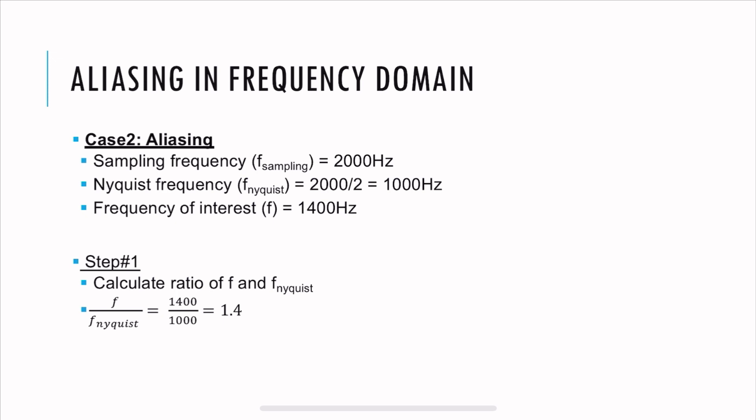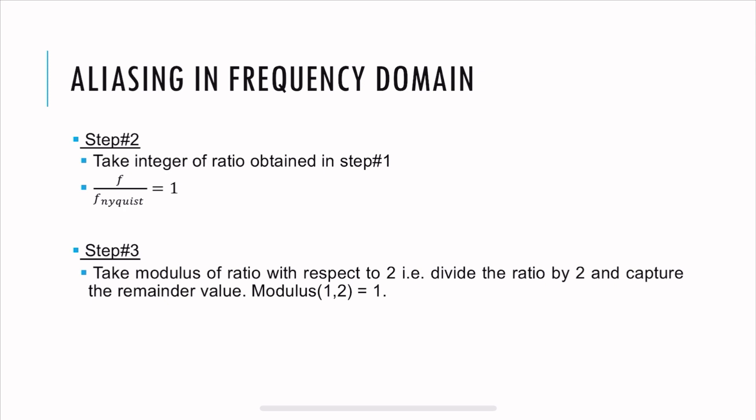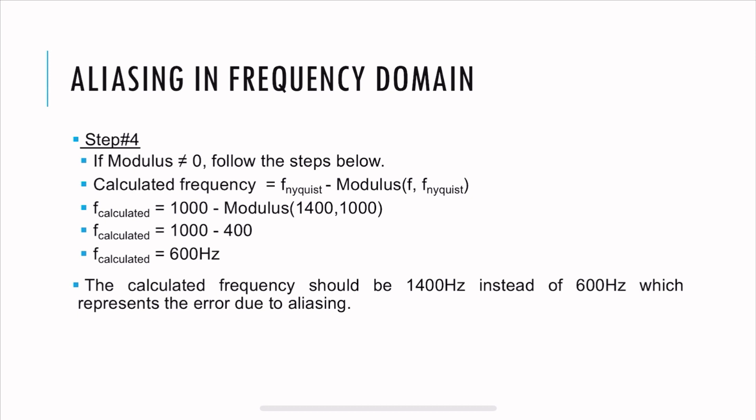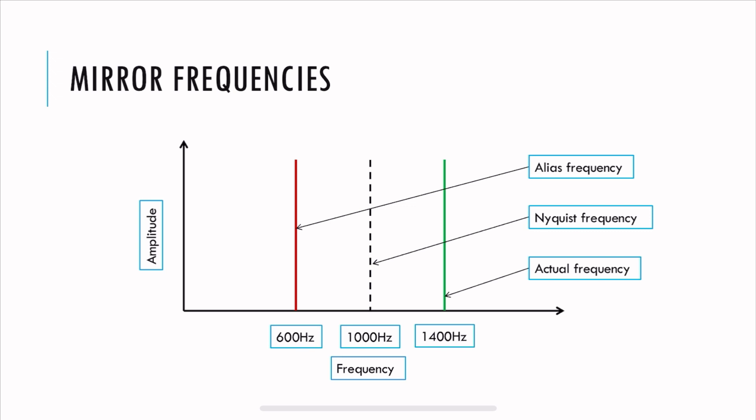So again, we follow the same steps. We calculate the ratio of f over f_Nyquist. We get it 1.4. The next step is to take the integer. And integer of 1.4 is we take 1. Then take the modulus, modulus of 1 over 2, and capture the remainder. The remainder is 1. So in this case, you observe that the modulus is no longer 0, it's 1. So if it's not 0, we follow a different procedure. So the calculated frequency is f_Nyquist minus the modulus of f and f_Nyquist. If you do the computation, you get 600 hertz. And the calculated frequency should be 1400 hertz, but it's not because there's aliasing. And to show a pictorial representation, it's going to look something like this. 1000 hertz is a Nyquist frequency. The actual frequency is 1400, but because we are having a poor sampling frequency, we're ending up with 600 hertz, which is actually not true.